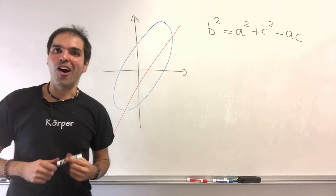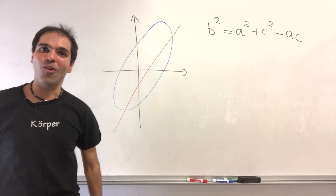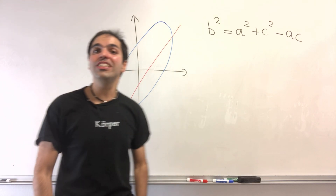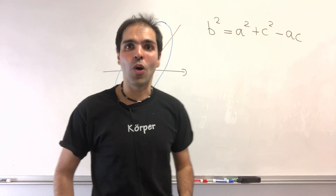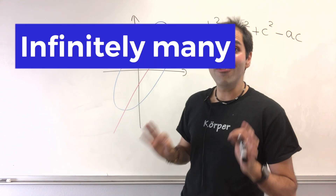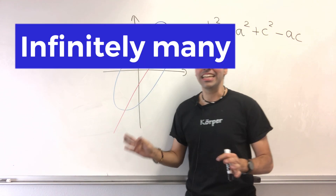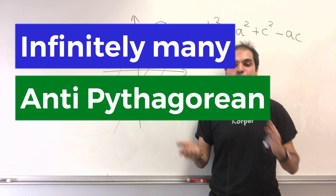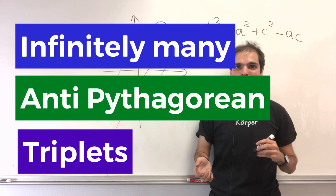This is the part you've all been waiting for, because today I will show that there are infinitely many anti-Pythagorean triplets.